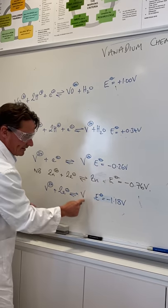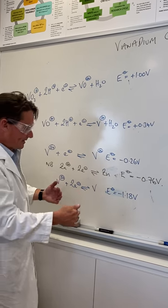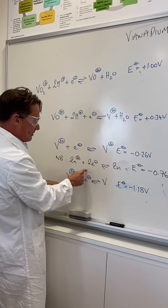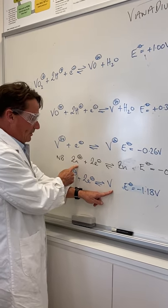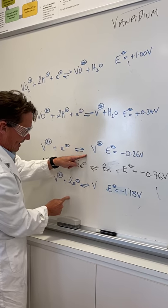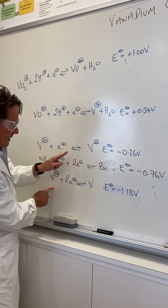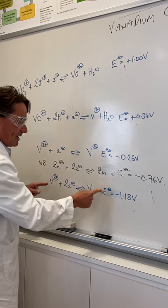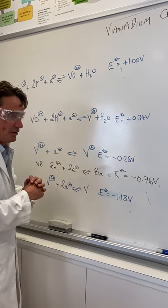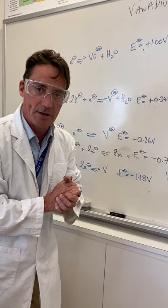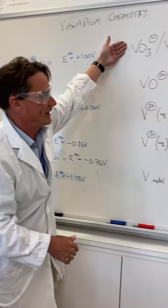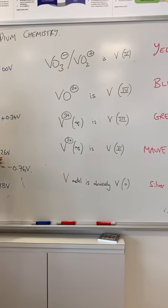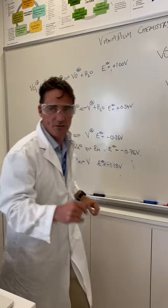Notice though that zinc isn't as reactive as vanadium as a metal. That is, zinc cannot reduce that because this is now more negative. So in fact, this reaction would happen the other way around, and zinc 2+ would turn into zinc, and vanadium would turn into vanadium 2+. So I can't reduce this all the way down to vanadium zero, but I can certainly get it all the way down from yellow to blue to green to mauve to vanadium 2+, which is what I'm going to do now.